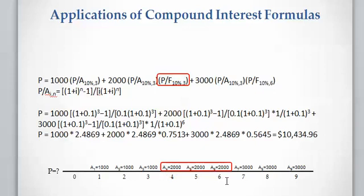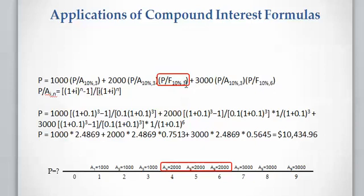For the second series — three payments of two thousand dollars at the end of years four, five, and six — if we use the factor P/A at 10 percent with three payments, this factor returns the present value of these three payments one year before the first one, which is year three. But we need it at year zero, so we need to discount the result for three more years. That's why we multiply by the discounting factor P/F(10%, 3).